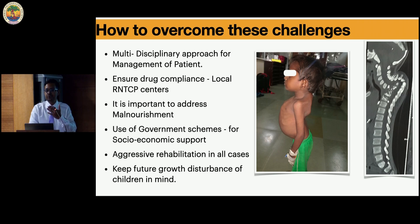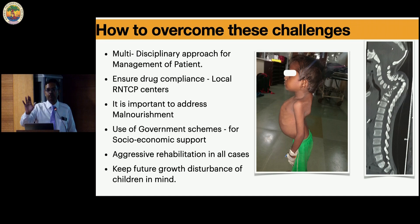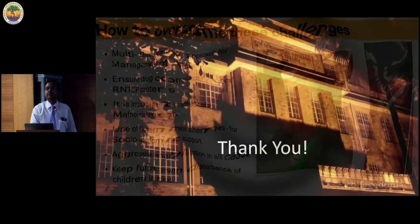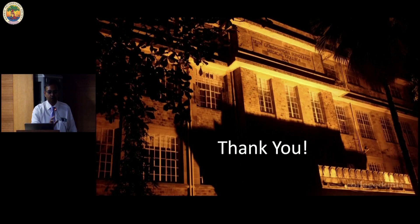In conclusion, a multidisciplinary approach is very important. We have to depend on local centers. It is important to address malnourishment. Use of government schemes has made a very significant difference. Aggressive rehabilitation is important — don't just operate and leave the kid; do regular follow-up and regular occupational and physiotherapy sessions. In kids, always keep future growth in mind. Thank you very much for your patient listening.